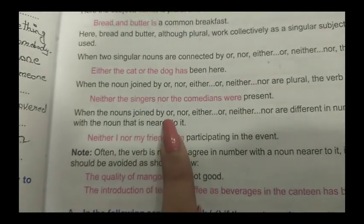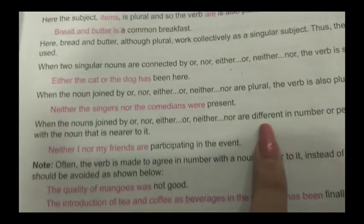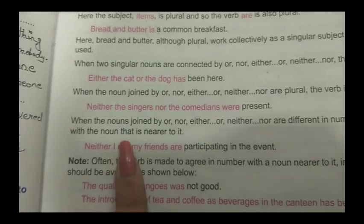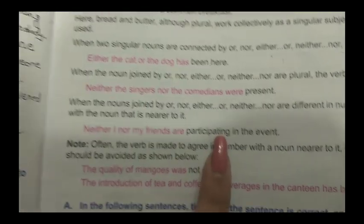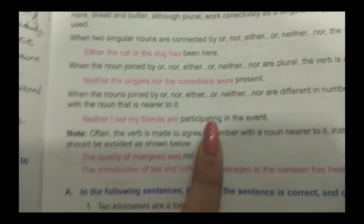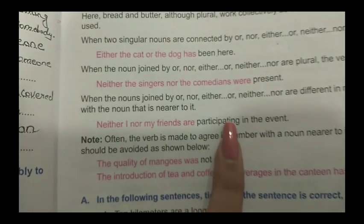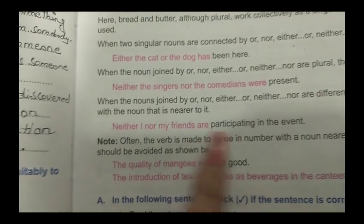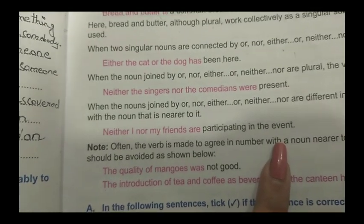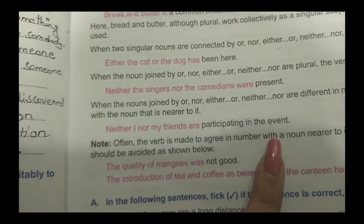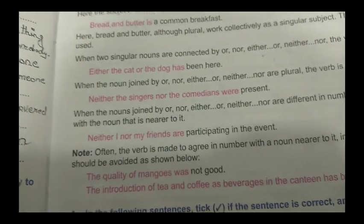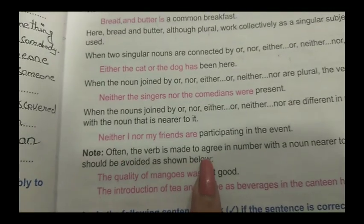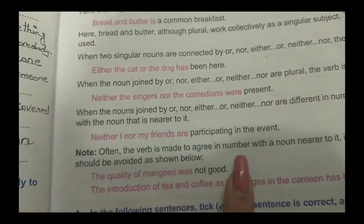When the nouns joined by or, nor, either...or, or neither...nor are different in number or person, the verb agrees with the noun that is nearer to it. For example: 'Neither I nor my friends are participating in the event.' Here the verb agrees with the noun closest to it, which can sometimes be unclear.